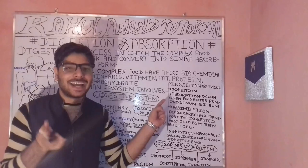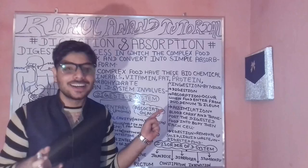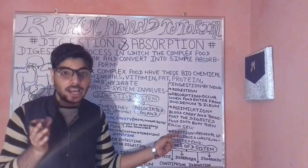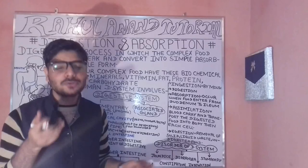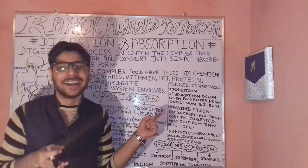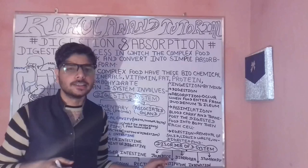In this lecture, we dealt with essential biomolecules such as minerals, vitamins, fats, and carbohydrates. We understood the steps involved in digestion: ingestion, digestion, absorption, assimilation, and ejection. We also covered the vital organs — buccal cavity with teeth (thecodont, diphyodont), tongue, saliva from salivary glands, and the oesophagus.